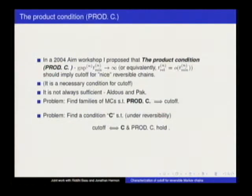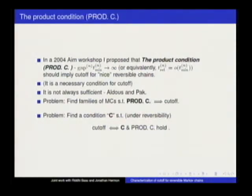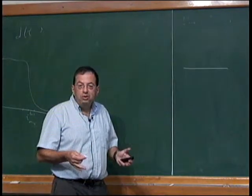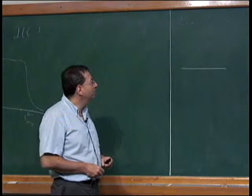Because of these examples, we know the product condition is necessary for cutoff, but we would like to find some additional condition that together with the product condition is equivalent to cutoff. That is the goal. I've been focused on this question since 2004, and it's still largely open. We have some progress, but the conditions we have are only verifiable in special cases—in particular, we still can't decide the case of random-to-random insertion.